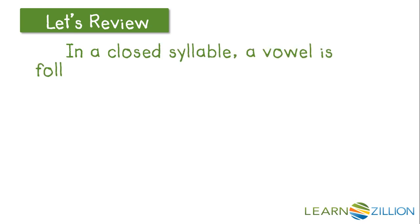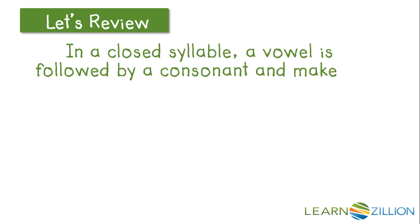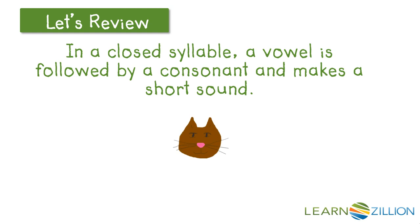Now, in a closed syllable, a vowel is followed by a consonant and makes a short sound. So, if we look at this example, we have that vowel A followed by the consonant T, so it's going to make the short sound: cat.